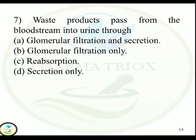Question 7: Waste products pass from the bloodstream into urine through — Option A: Glomerular filtration and secretion. Option B: Glomerular filtration only. Option C: Reabsorption. Option D: Secretion only. Correct answer is Option A — glomerular filtration and secretion.